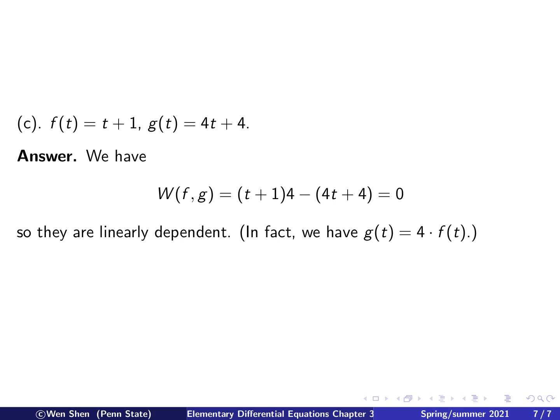The next pair: f equals t plus 1, g equals 4t plus 4. Computing the Wronskian: f times g prime gives (t plus 1) times 4, minus f prime times g gives 1 times (4t plus 4). This gives 4t plus 4 minus 4t minus 4, which equals zero. Therefore these two functions are linearly dependent. Indeed, we can factor g as 4 times (t plus 1), which equals 4 times f — confirming the linear dependence relation.